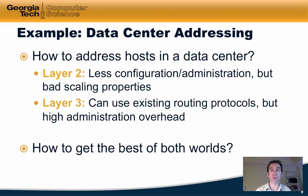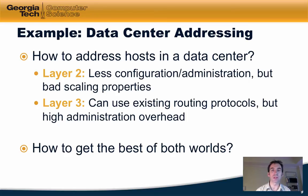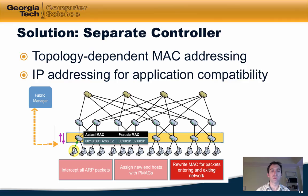So how do we get the best of both worlds? One idea is to use layer 2 addressing and construct a large layer 2 network, but to make those addresses topology-specific rather than topology-independent. Since MAC addresses are typically flat, the idea is to re-number or re-address hosts so that their MAC addresses depend on where they are in the topology. Hosts can still send traffic to other hosts' IP addresses, but since we've reassigned the MAC addresses to be topology-dependent, the hosts don't actually know they've had their MAC addresses reassigned — they still think they have their old flat MAC addresses.